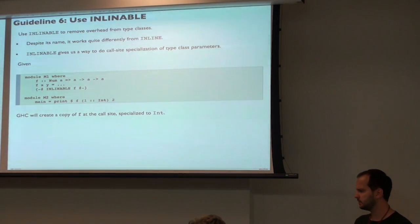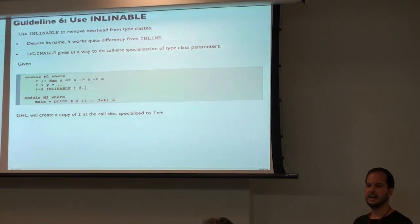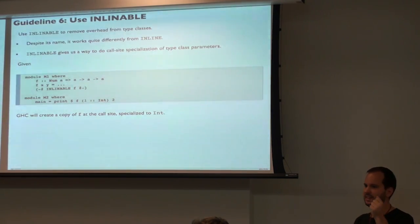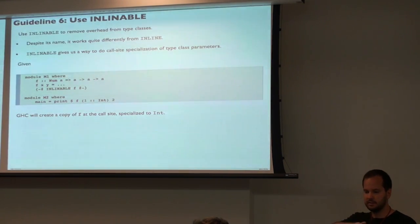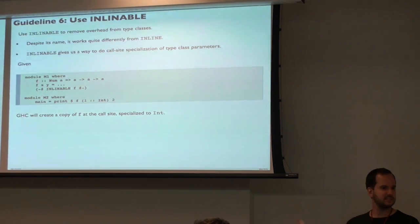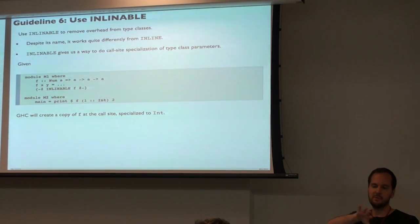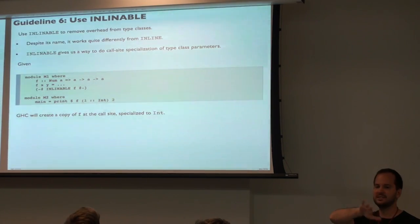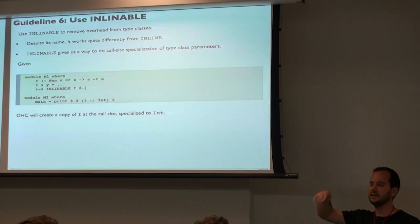Question: how is INLINABLE related to the SPECIALIZE pragma? The difference is: INLINABLE is call-site driven — you can't enumerate all the ways f is going to be used, so you bring the body of f along and let the call site decide what specialization to do. SPECIALIZE is definition-site driven — you say 'I want these three specific specializations' and GHC generates them there. INLINABLE is much better in that sense — it doesn't force you to enumerate all cases. And if it specializes in one module, that rewrite rule gets exported to all modules that depend on this one, so you get better code reuse.